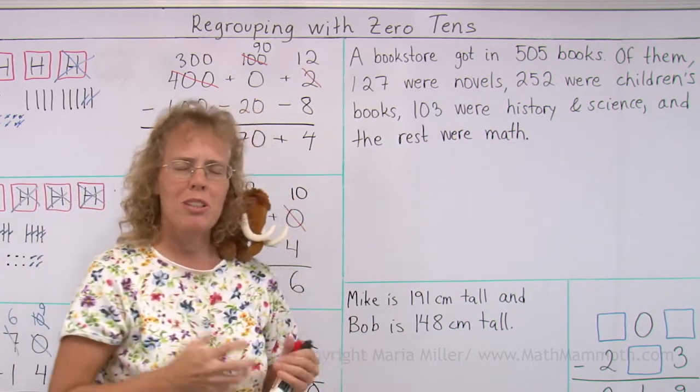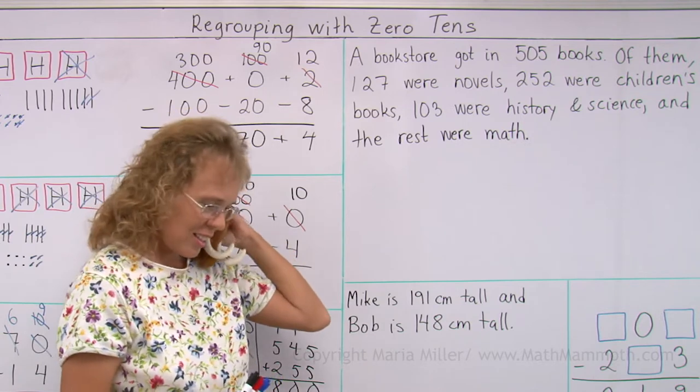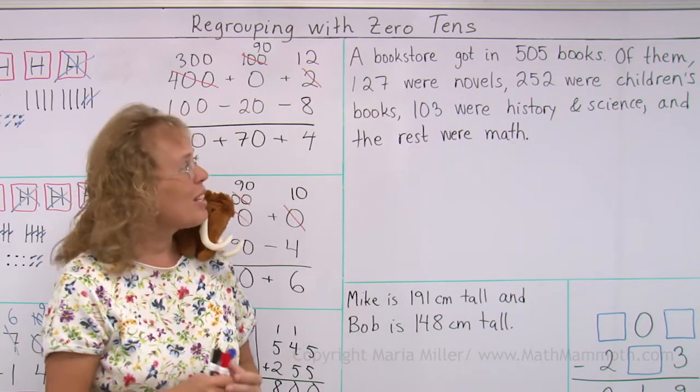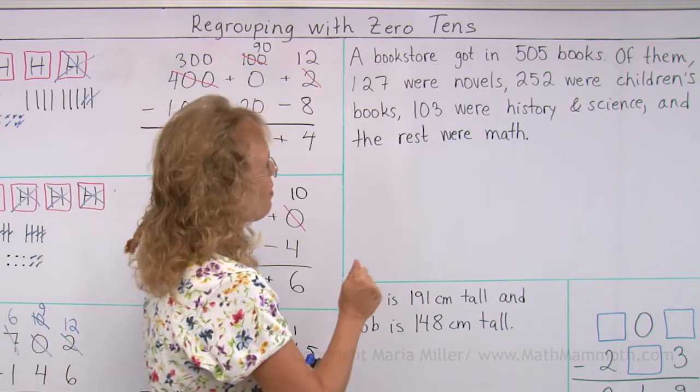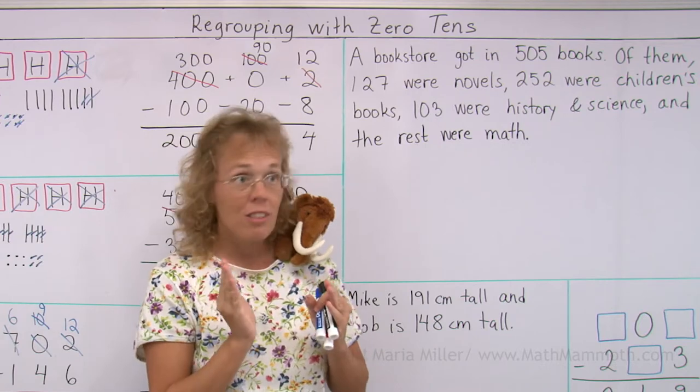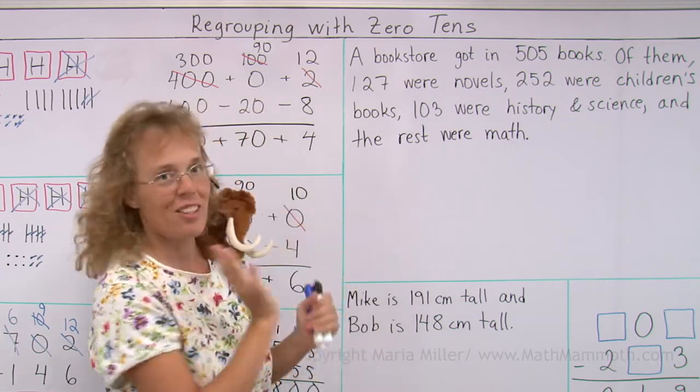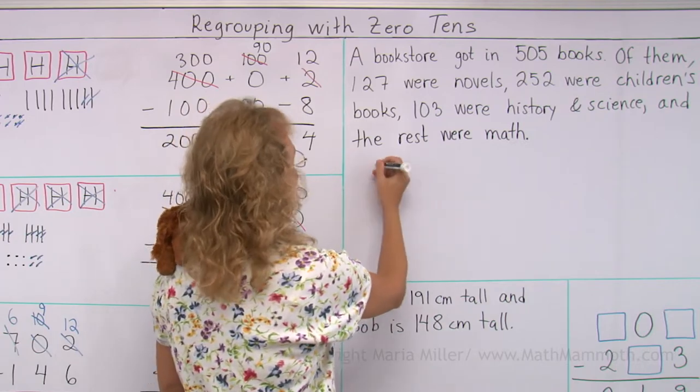What can we do with this word problem? What can we solve? Matthew knows. Yeah, we can solve how many math books there were, and that's what we're going to do. To find that out, I'm going to first solve how many there are, all those other kinds of books. So we'll add all those other kinds of books together.